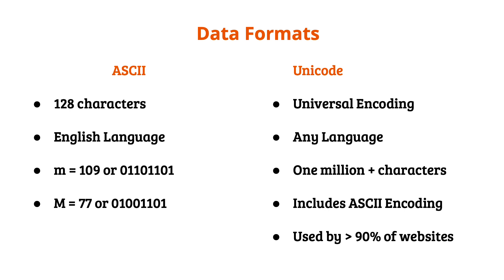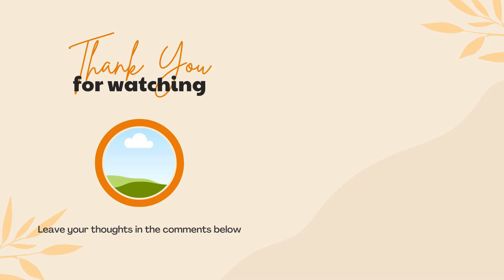Unicode is another encoding standard, but it is more universal and includes more symbols and characters from thousands of languages from all around the world. Unicode also contains the same encoding as ASCII for the English language. The Unicode standard contains over 1 million possible symbols and characters from all around the world.